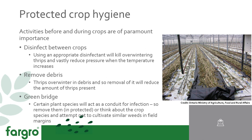Beyond monitoring, if you want to really control thrips, one of the best things you can do is ensure good crop hygiene. Your activities before and during the crop are of paramount importance. If you're growing in protection and have periods where you completely remove the crop, it's very important to disinfect and ensure good coverage around the glasshouse or polytunnel using an appropriate disinfectant — that will kill overwintering thrips and vastly reduce pressure when temperatures increase. Also remove debris, as thrips overwinter in debris, which will again vastly reduce the amount present.